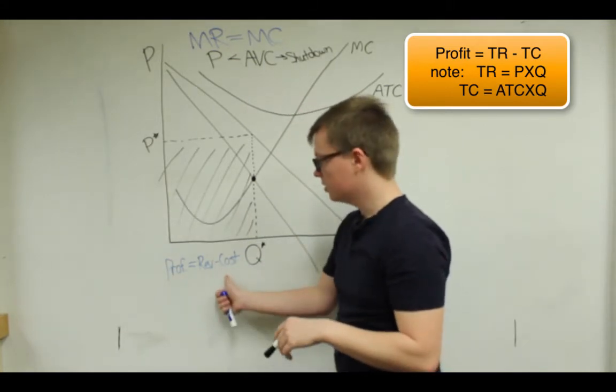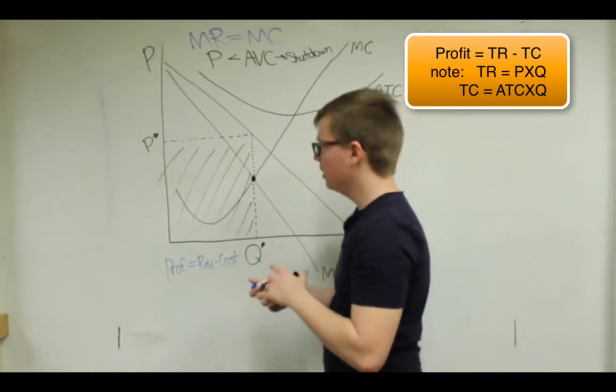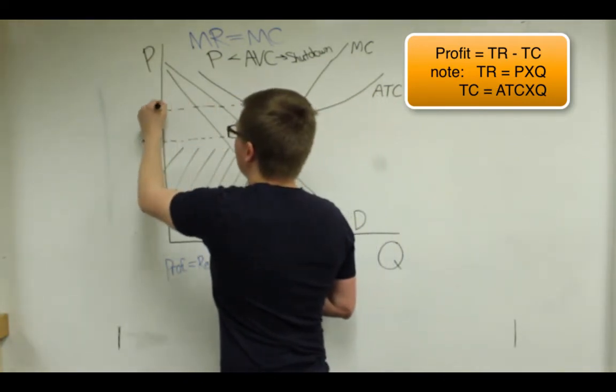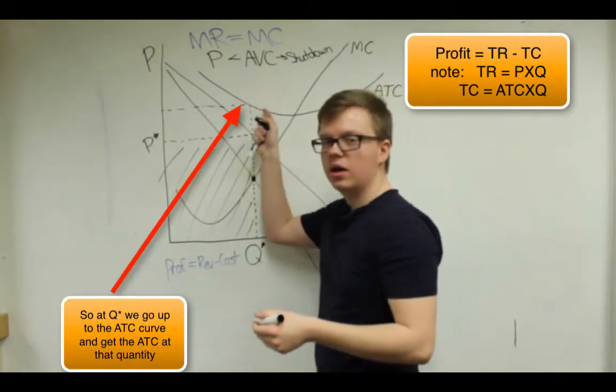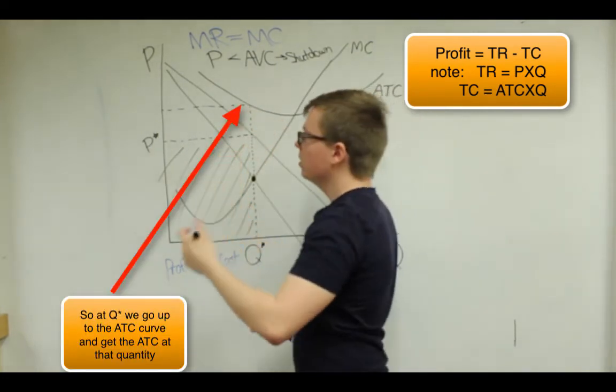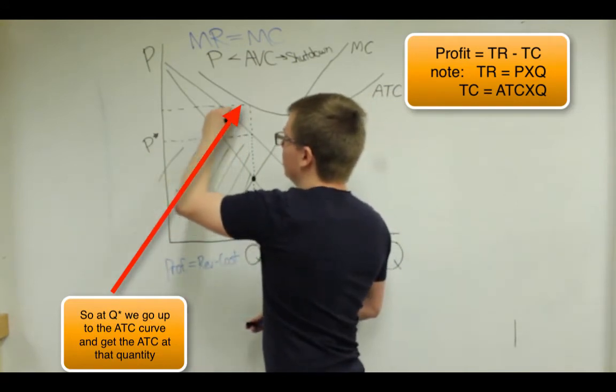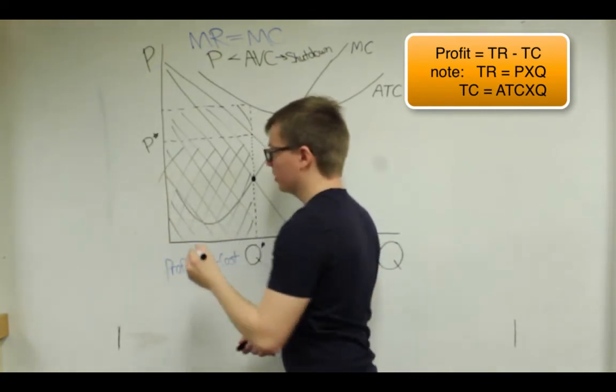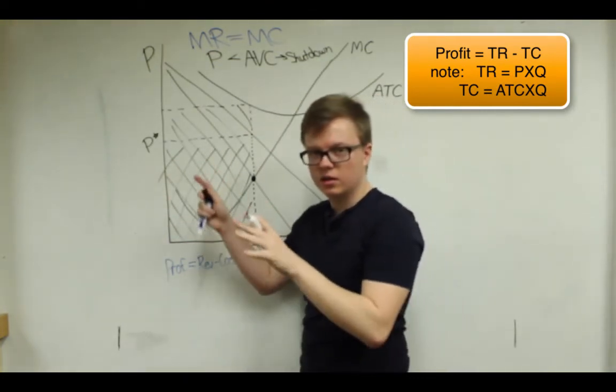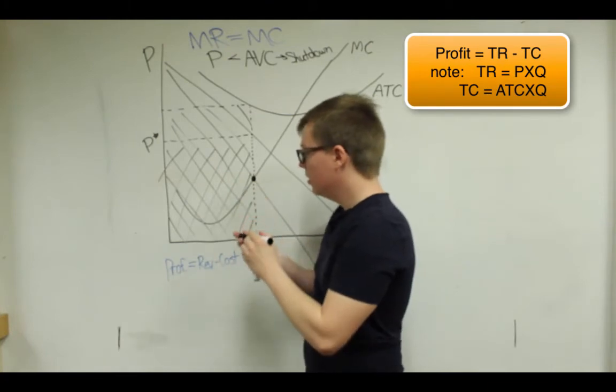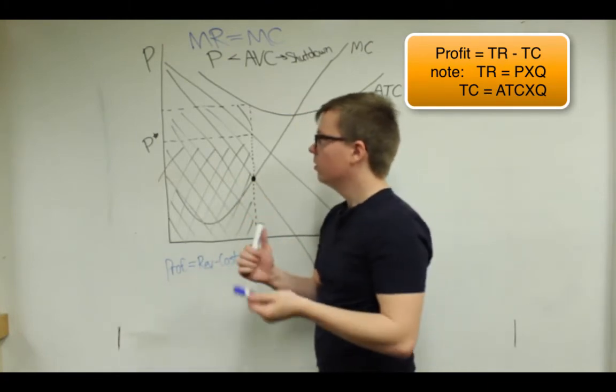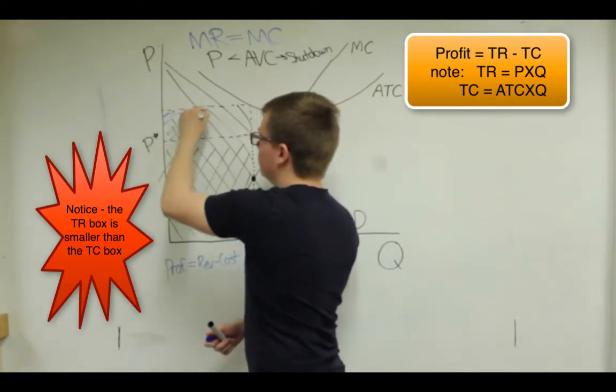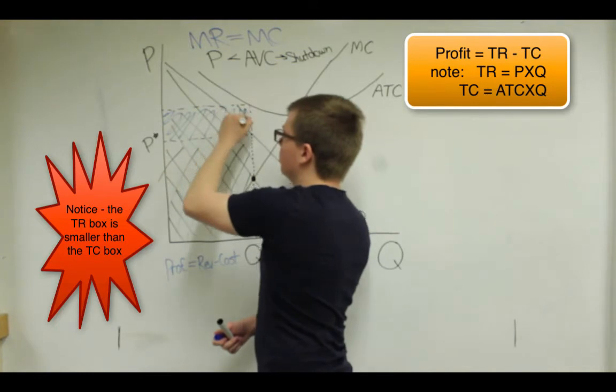And then to subtract their cost, you could take, at that quantity, their average total cost is up here because that's the average total cost curve. So their total cost is that entire bigger rectangle. So it looks kind of confusing here, but if you subtract the revenue minus cost, what you're left with is this smaller rectangle up here.